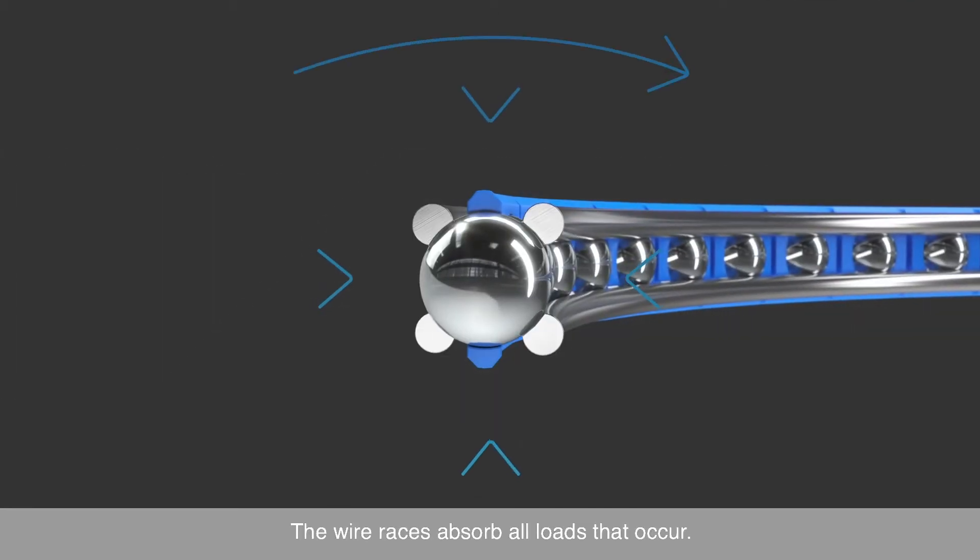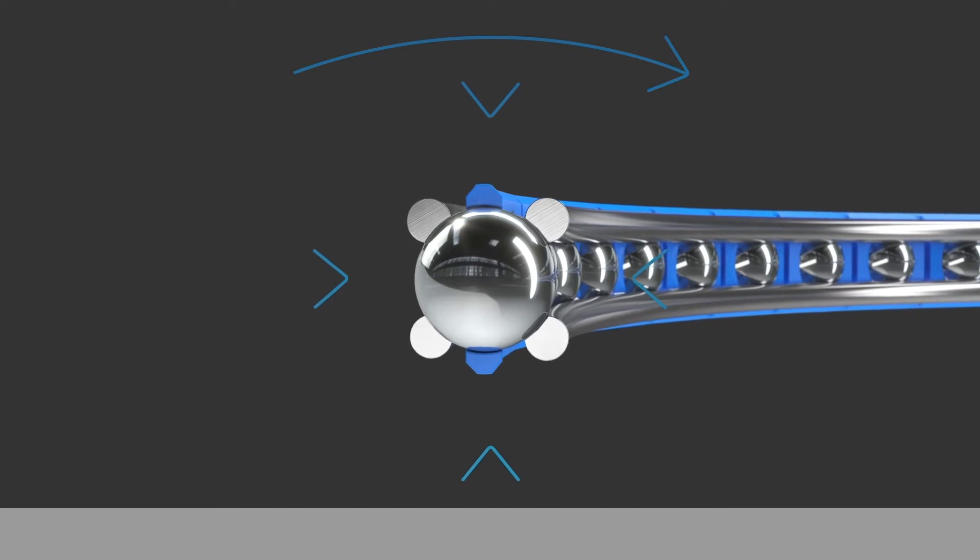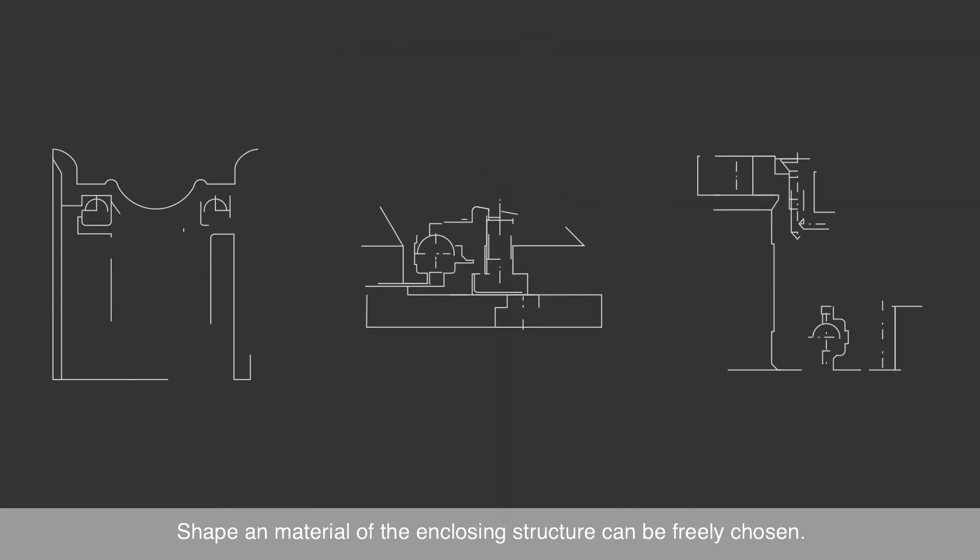The wire races absorb all loads that occur. The shape and material of the enclosing structure can be freely chosen.